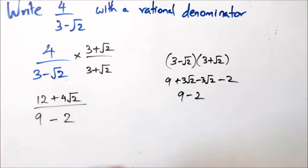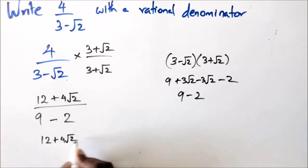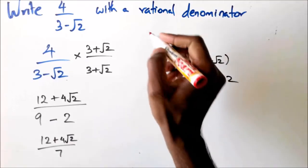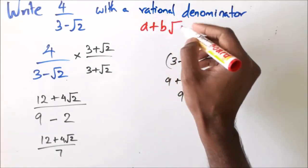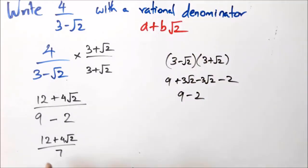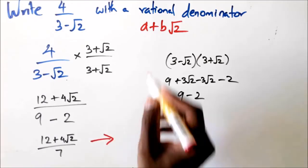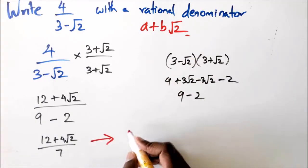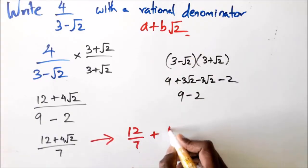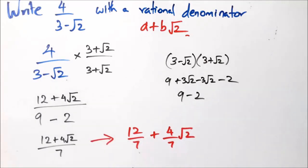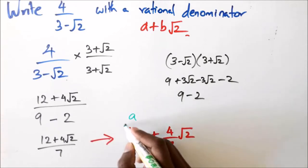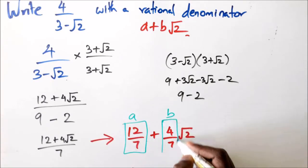So this becomes 12 plus 4√2 over 7. Now if they ask you to write this in a plus b√2 format, you can't leave it like that — you need to write it as 12/7 plus 4/7·√2. In this case 12/7 becomes a and 4/7 becomes b.